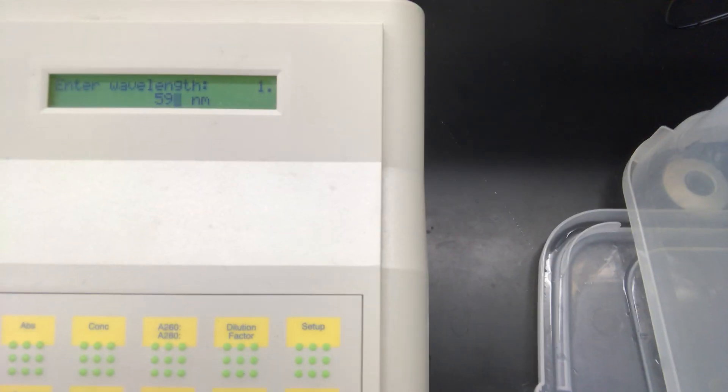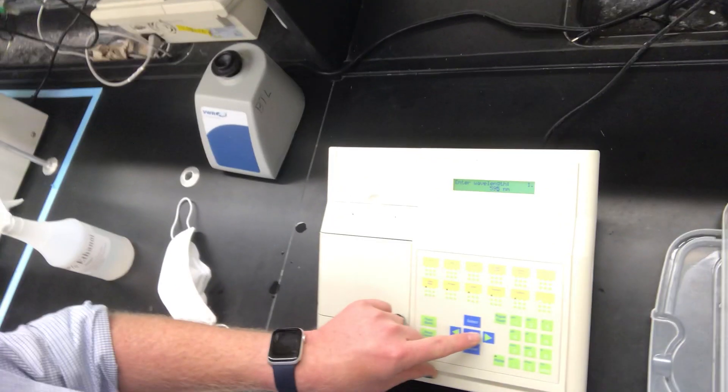Then it prompts you for what wavelength you are measuring. For a Bradford assay, we're going to punch in 5, 9, 5.